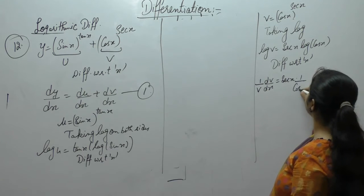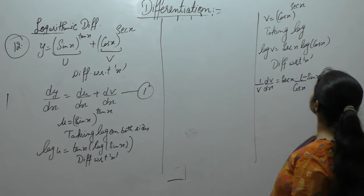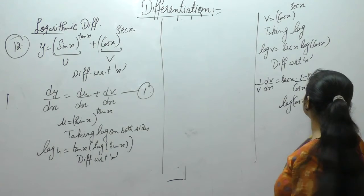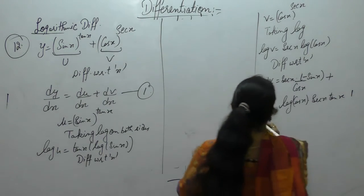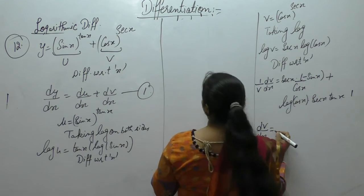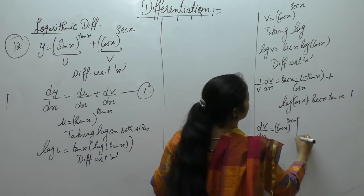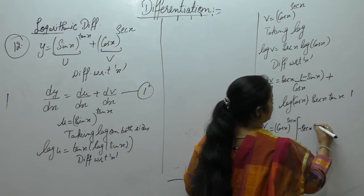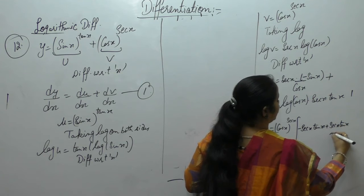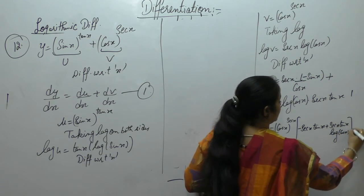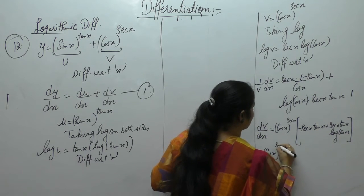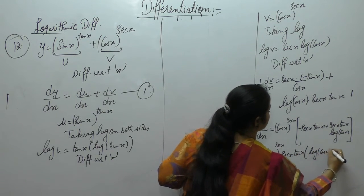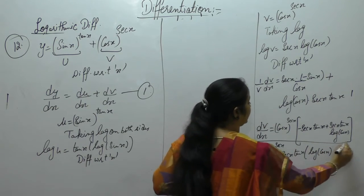Here x is cos(x), then derivative of cos gives a minus sign. Plus log(cos x) as it is, derivative of sec x is sec(x)tan(x). So we get dv/dx as: v = cos(x)^sec(x), times [−sec(x)tan(x) + sec(x)tan(x) · log(cos x)]. Taking sec(x)tan(x) common: dv/dx = cos(x)^sec(x) · sec(x)tan(x) · [log(cos x) − 1].